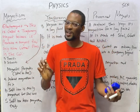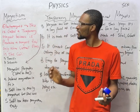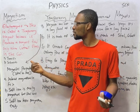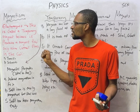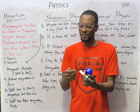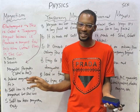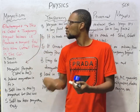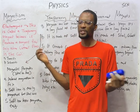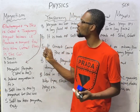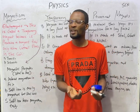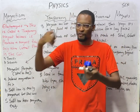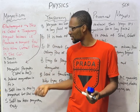Electromagnets are referred to as temporary magnets because they produce a magnetic field only when current flows in the coil. When the current is removed, there is no magnetic field. Toroids and solenoids are examples of electromagnets.